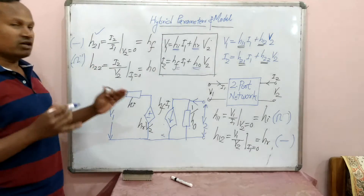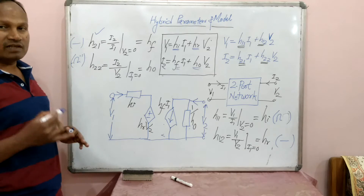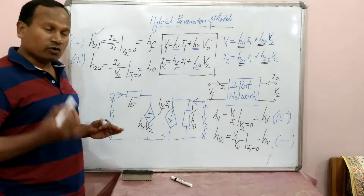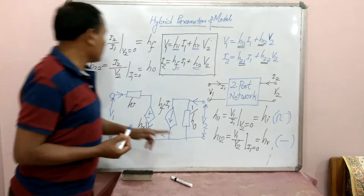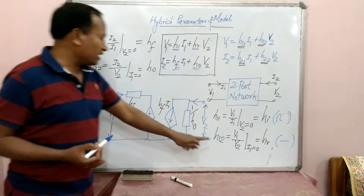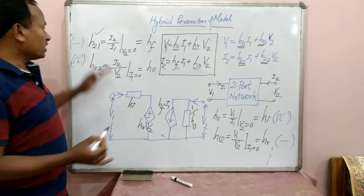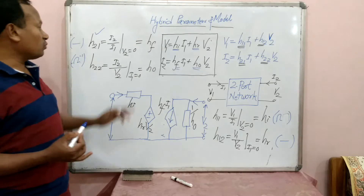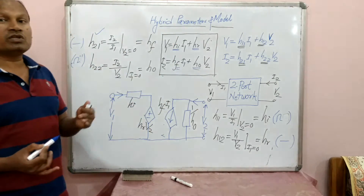Why are these called hybrid parameters? For Z parameters, all parameters have dimensions in ohms. For Y parameters, all dimensions are in per ohm (mho). But here HI is in ohms, HO is in per ohm, whereas HF and HR have no dimension at all. The dimensions are of a mixed nature, and hybrid means mixed — therefore we call these parameters hybrid parameters.